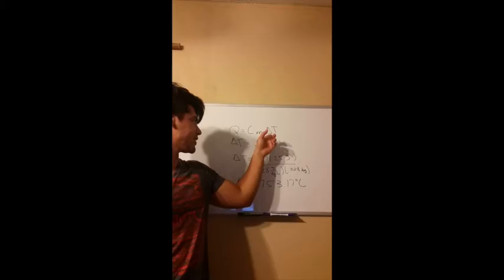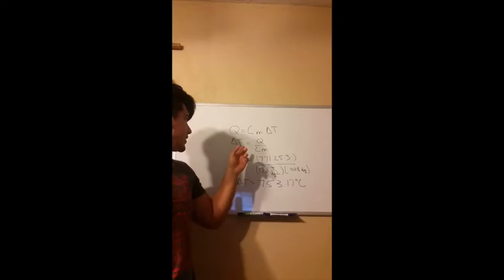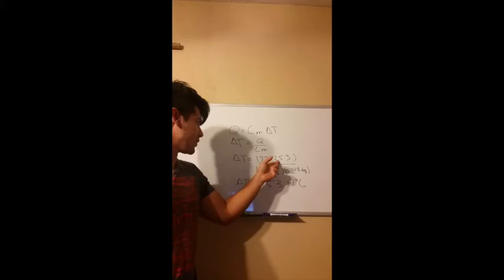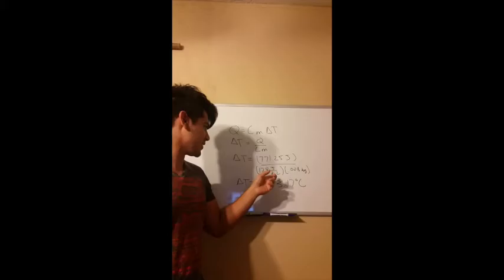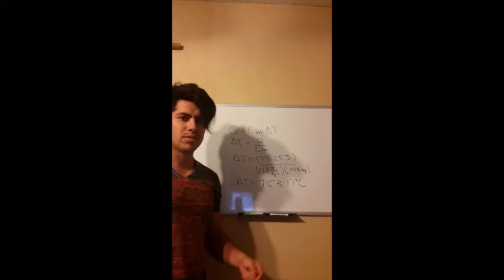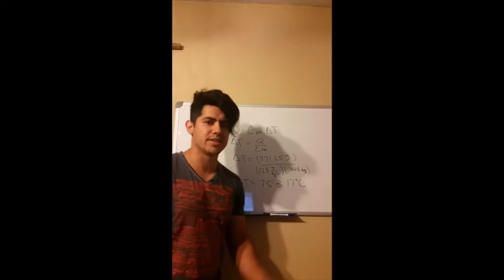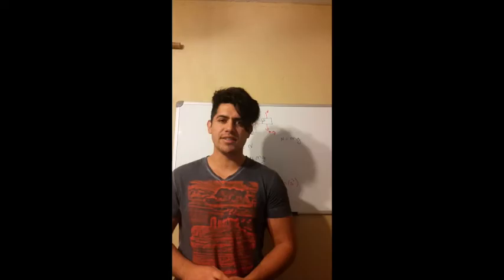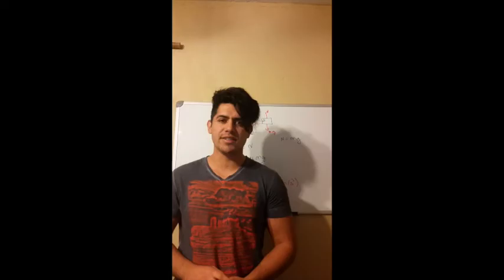We are now asked to find the temperature rise of the bullet after the collision, because the bullet itself absorbs energy at the moment of impact. When heat is absorbed we use the equation Q equals heat capacity times mass times the change in temperature. Solving for the change in temperature: ΔT equals Q divided by heat capacity times mass. Substituting our values — heat is 771.25 Joules, heat capacity is 128 J/(kg·°C) for the bullet, and mass is 0.008 kilograms — we get 753.17 degrees Celsius.